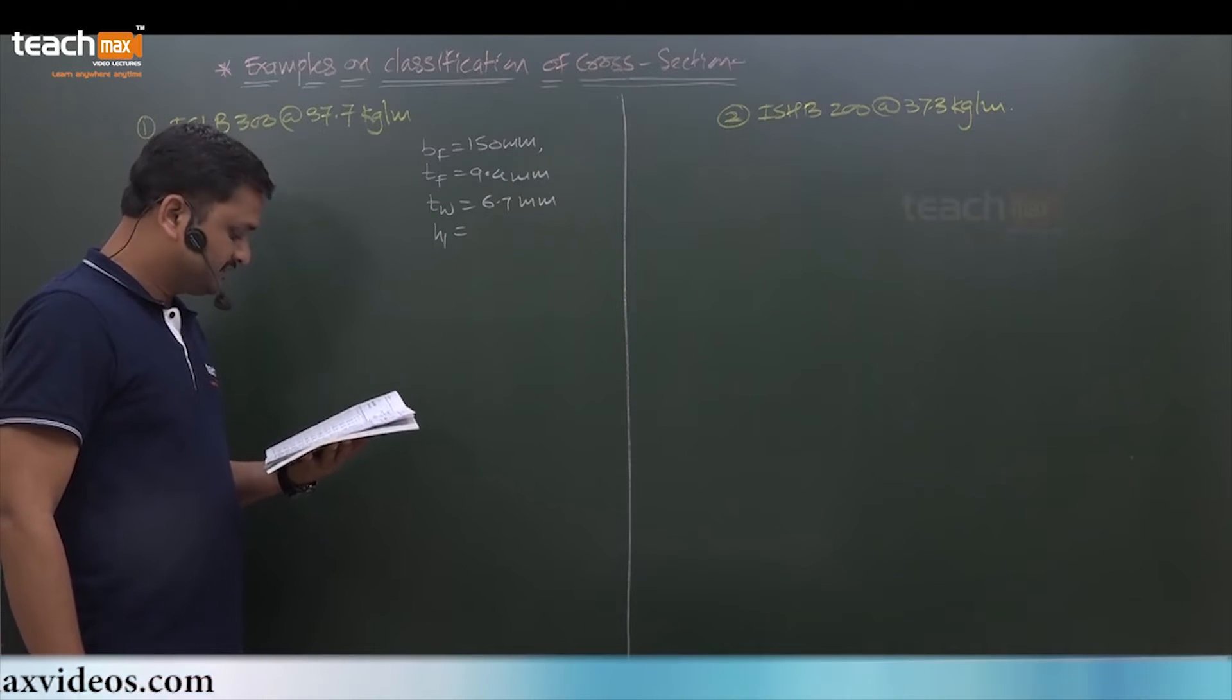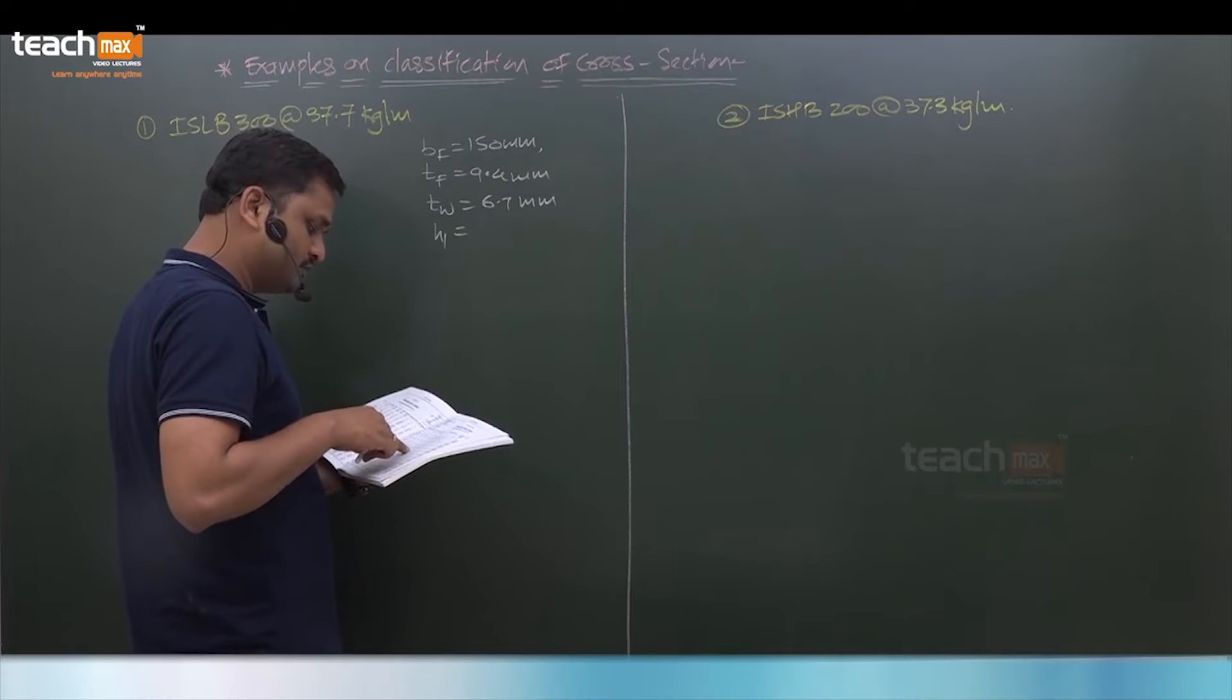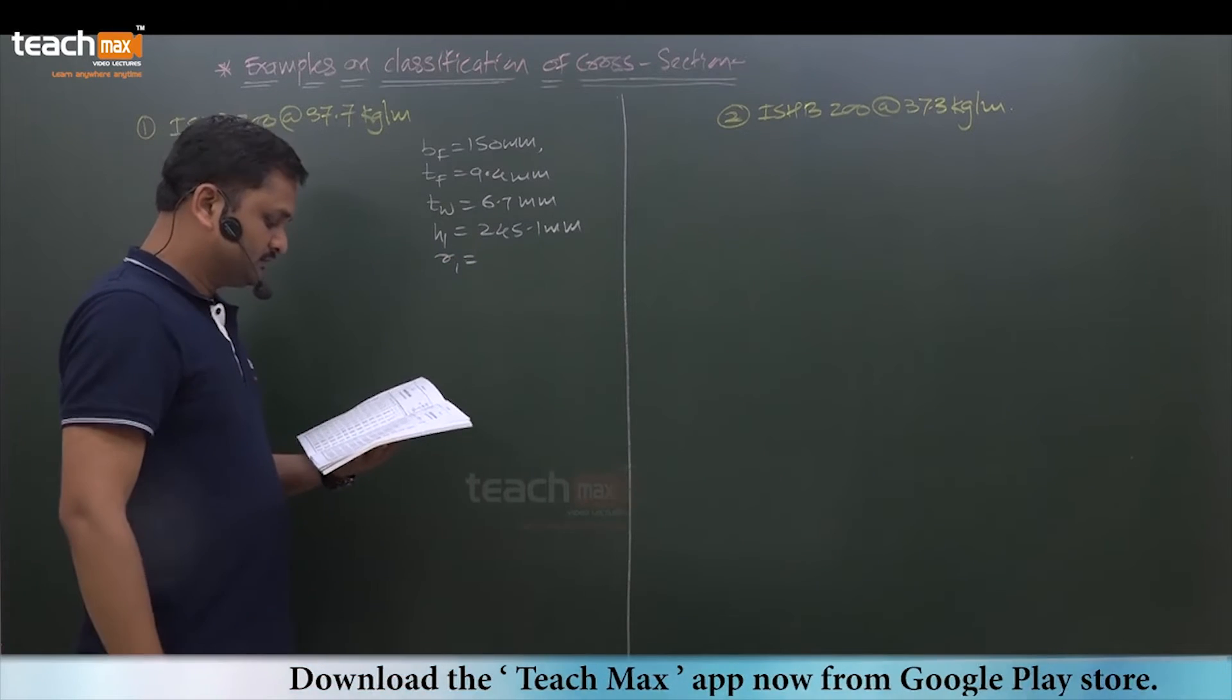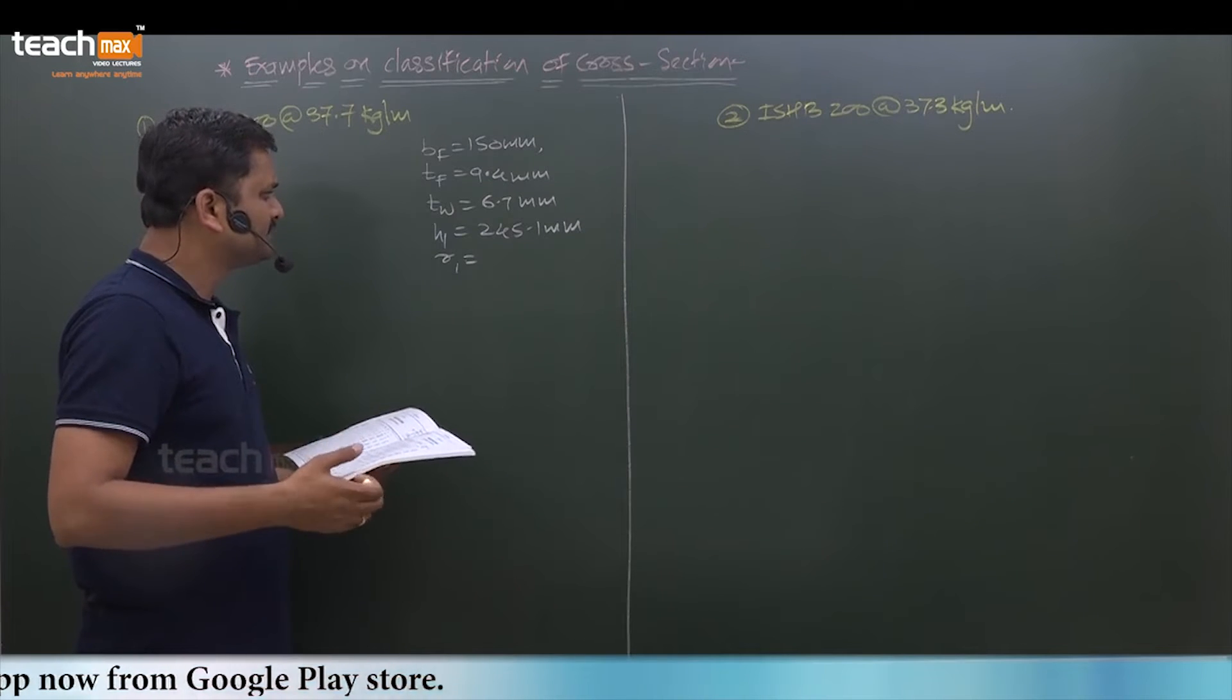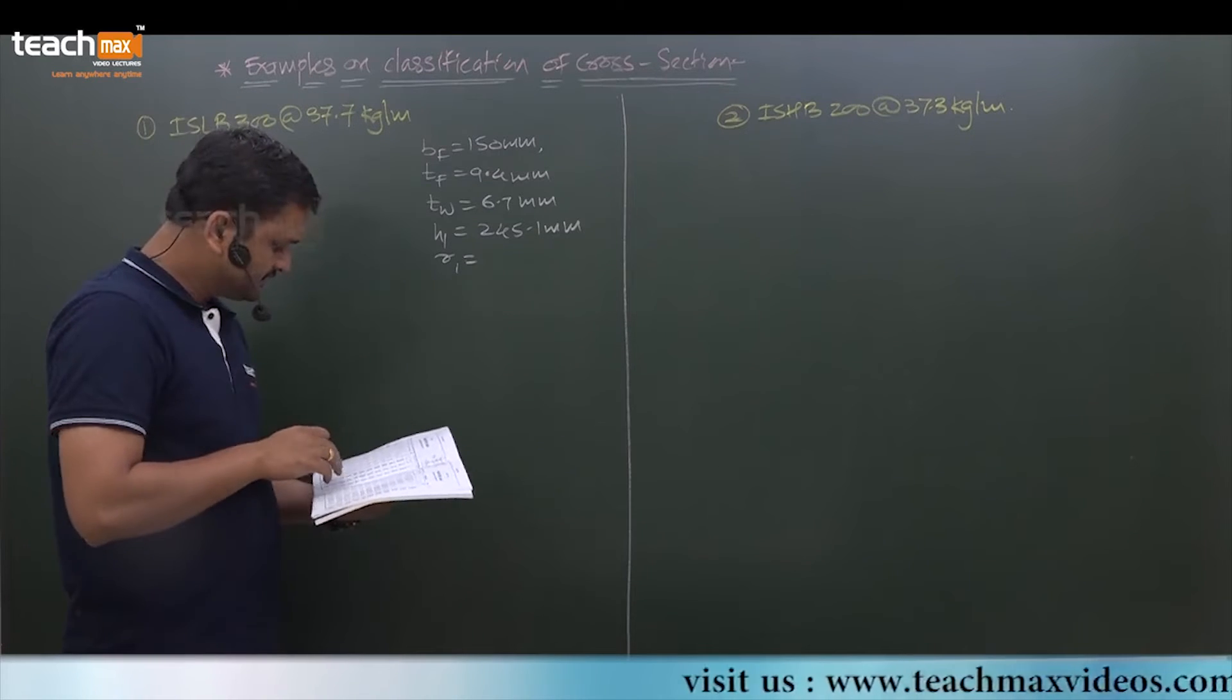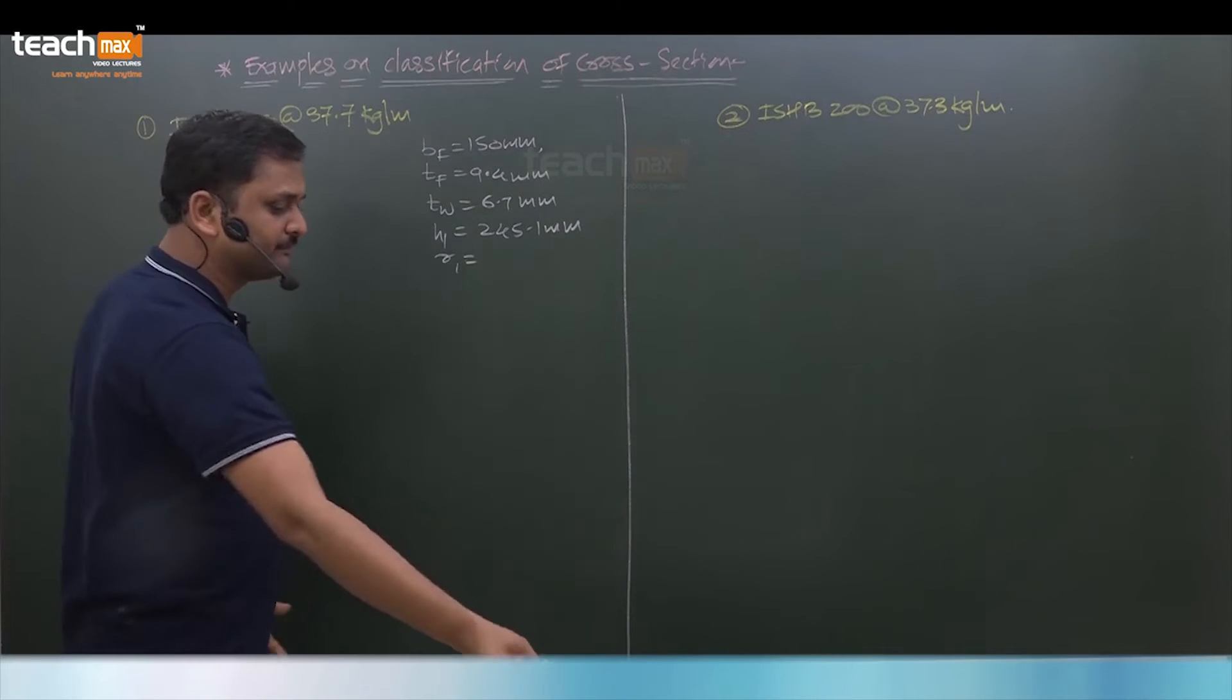h1 directly is available in steel table, it is 245.1 mm, or you can use radius at root to find out the clear depth of web. The difference between two values is very negligible. You can use h1 or go with the second approach. I am going to solve the example using both approaches so you will understand. r1 radius at root is 15 mm.